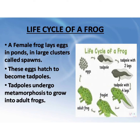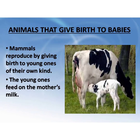Animals reproduce in two ways — animals that lay eggs, and animals that give birth to babies. Mammals reproduce by giving birth to young ones of their own kind. The young ones grow inside the body of the mother till they are born. Once they are born, the young ones feed on the mother's milk.